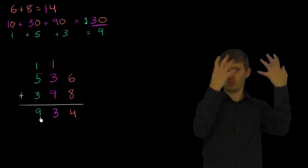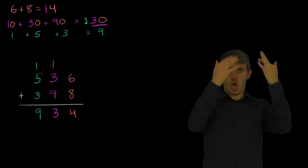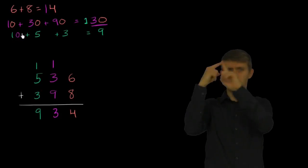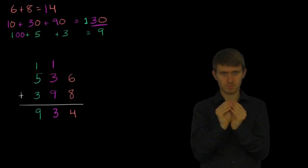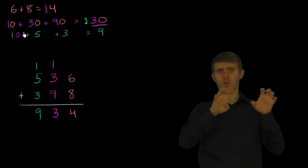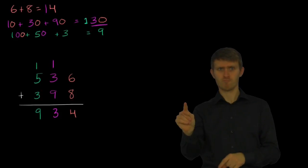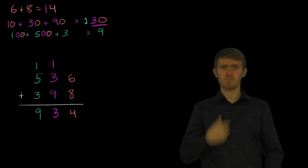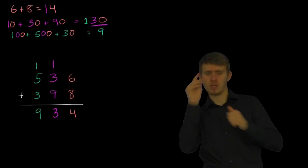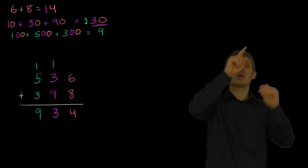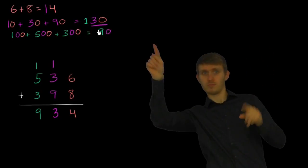But we have to remind ourselves, this is 900. This is in the hundreds place. So this is actually 100. I want to make all the colors the same. So this is actually 100 plus 500 plus 300. Let me get the color coding right. Plus 300 is equal to 900.